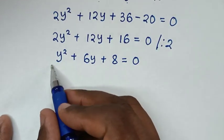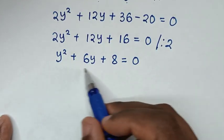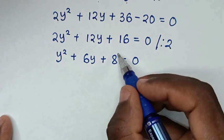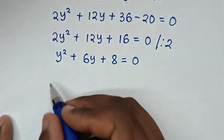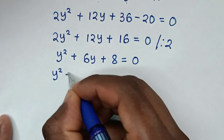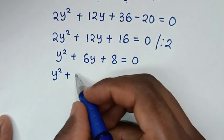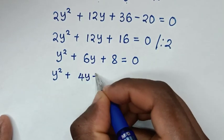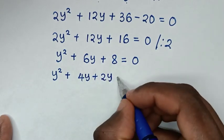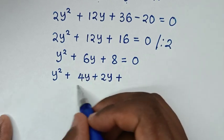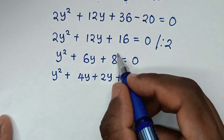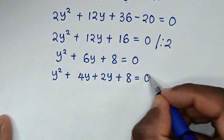We solve this quadratic equation by grouping and factorization. The product is 8 and the sum is 6, so we split 6y into 4y plus 2y, because 4 times 2 is 8 and 4y plus 2y is 6y. So we have y squared plus 4y plus 2y plus 8 equals 0.